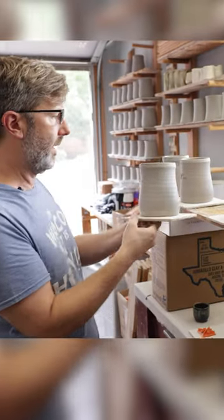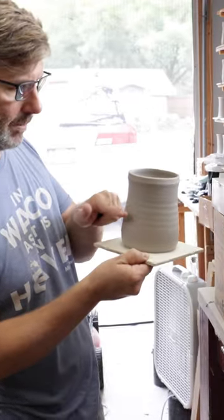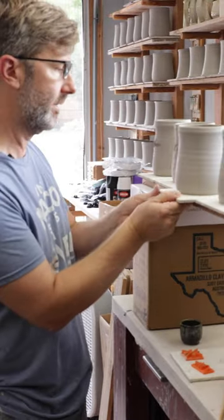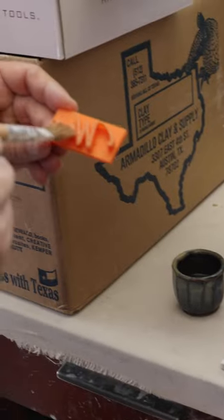I like to orient where I want the handle to be. I have a little bit of an inconsistency on the lip here, so I want the stamp to be somewhere over here. I'm going to orient it like this. First thing I'm going to do is take some oil. This is just vegetable oil from the kitchen.